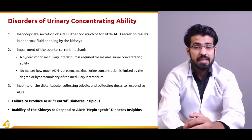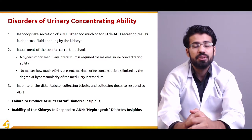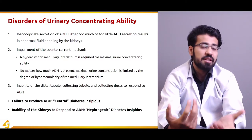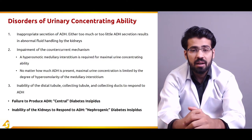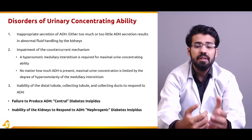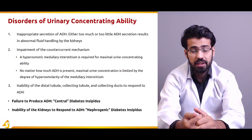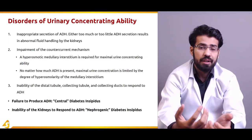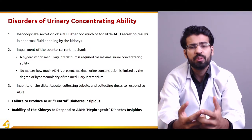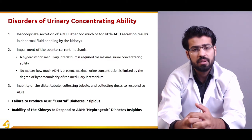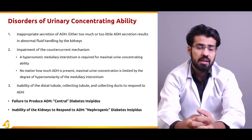Nephrogenic diabetes insipidus is the inability of the kidney to respond to ADH. ADH is being produced and secreted, but kidney dysfunction means ADH is not responded to. In this scenario as well, large quantities of dilute urine are produced. This occurs due to a variety of reasons, which will be discussed elsewhere.